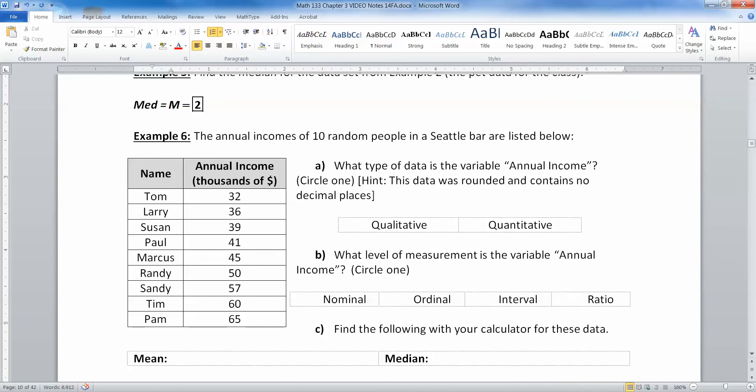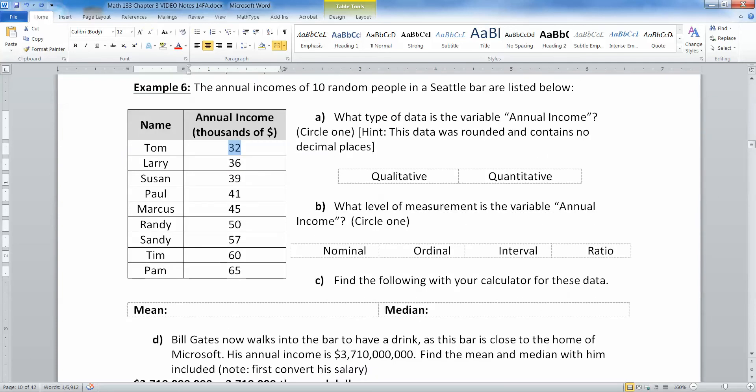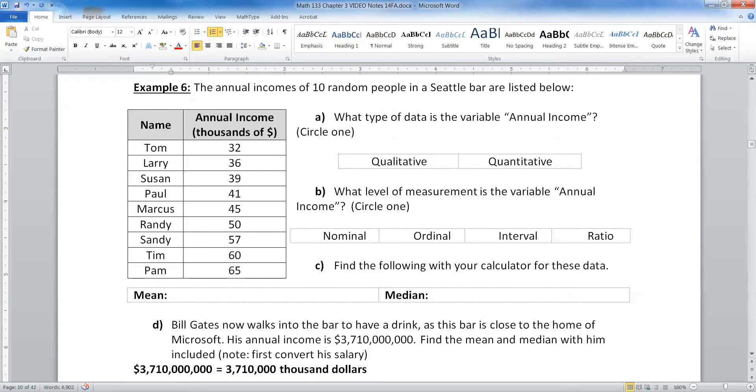So now let's think about resistance a little bit more. We have a little exploratory example here. We have the annual incomes of 10 random people in a Seattle bar are listed below. We have Tom, Larry, Susan and so on. And here are their incomes and there's the unit, thousands of dollars. So Tom makes $32,000 and so on.